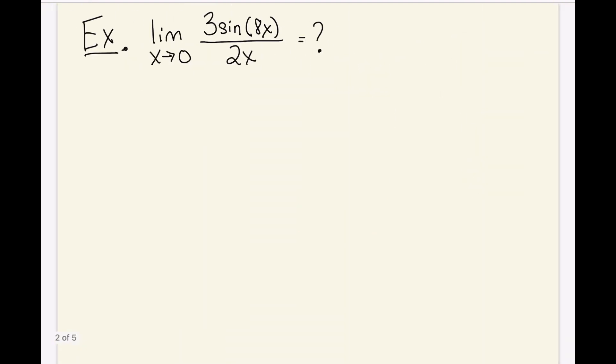So going back to this example, the first thing I do is I look inside of the sine function and I see 8x. So I'm going to try to get something in the form of sin(8x) over 8x because I know that the limit as x approaches 0 of this function will be equal to 1. I don't have that yet. You can see I have an 8x here, but I only have a 2x here, and then I have a 3 here.